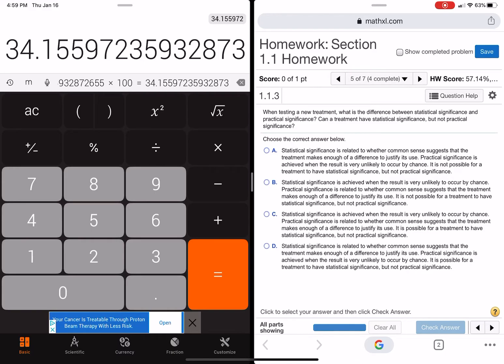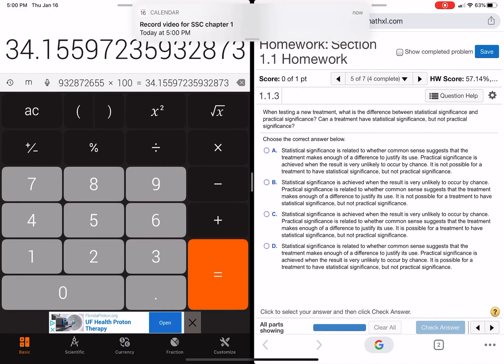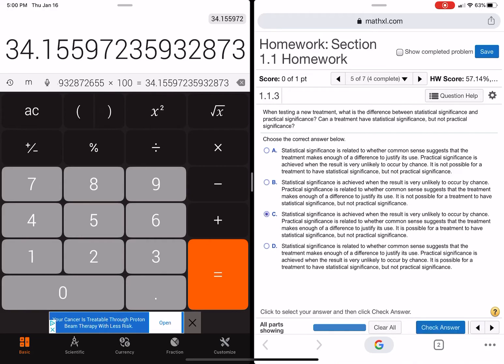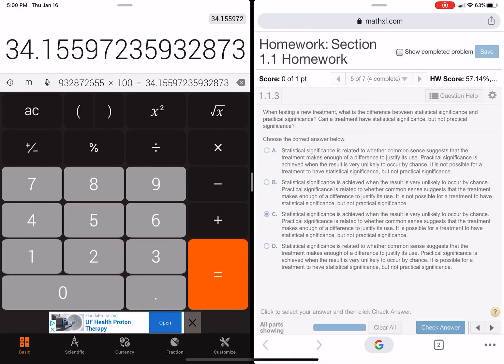I don't really like the way this thing's worded. So practical significance is basically when, this is the definition: when common sense suggests that the treatment makes enough of a difference to justify its use. That's practical significance. It is possible for a treatment to have statistical? I think that's true. Something could be really small. You could have a small difference be statistically significant, but it's not practical significance. So that's true.